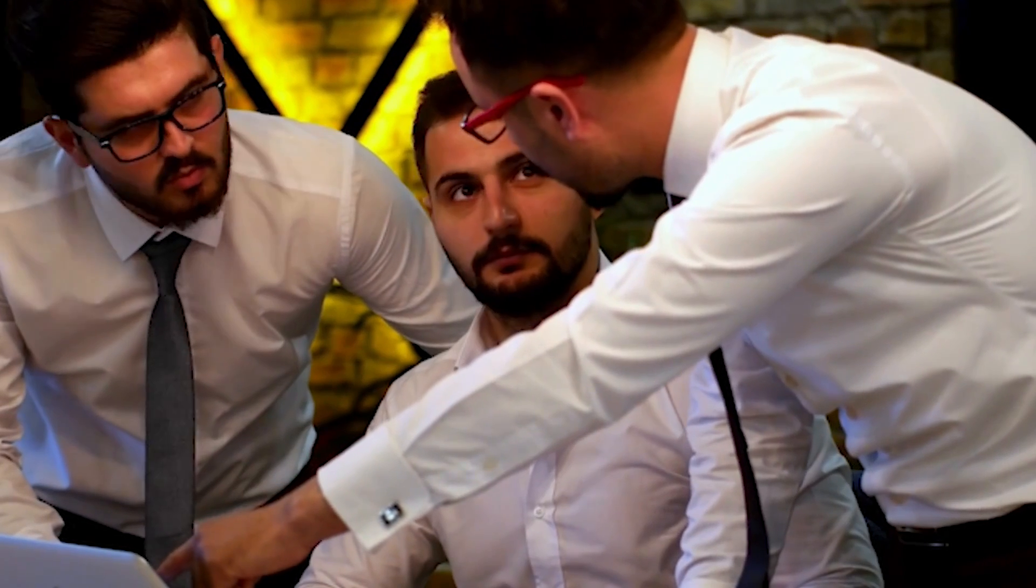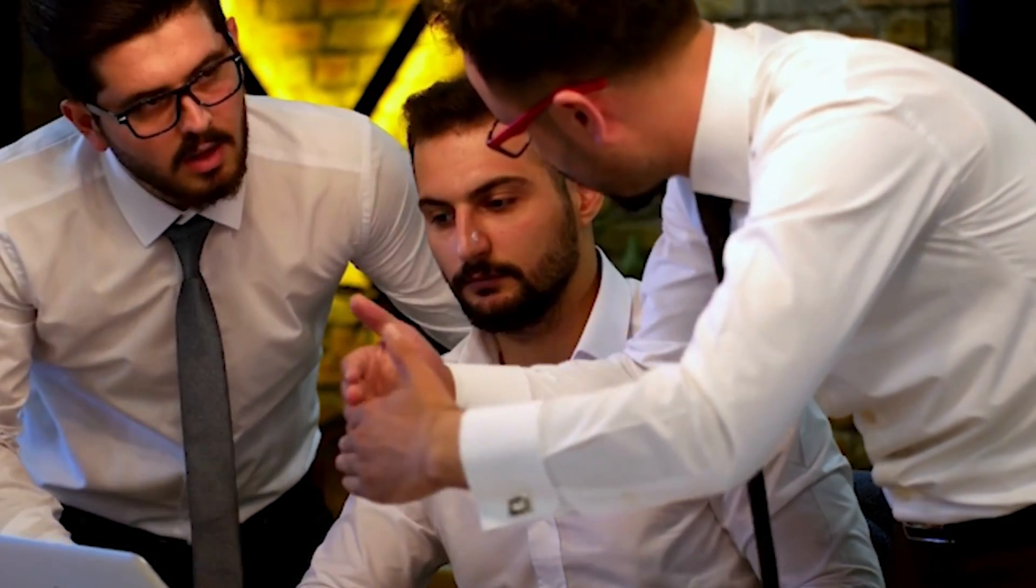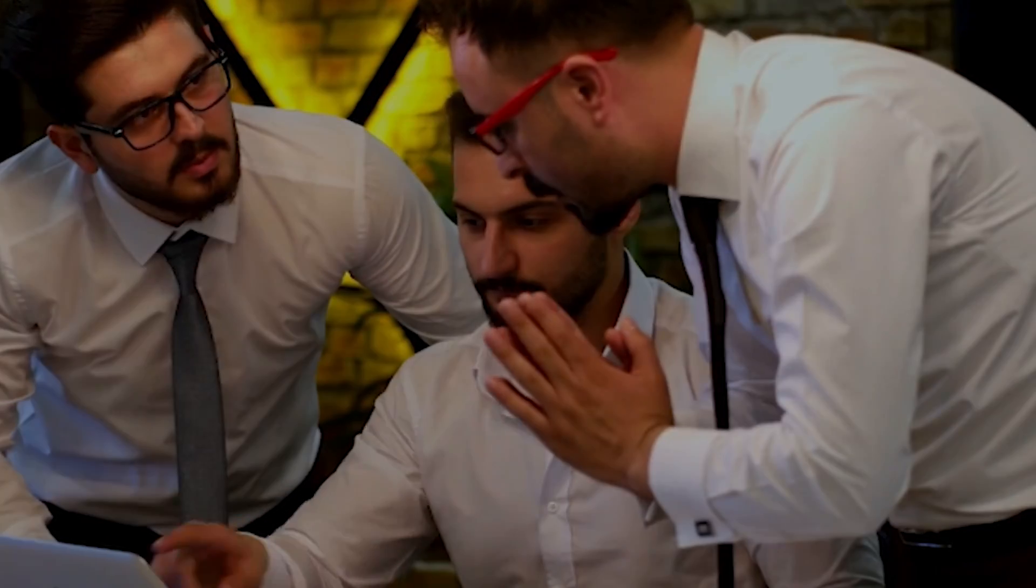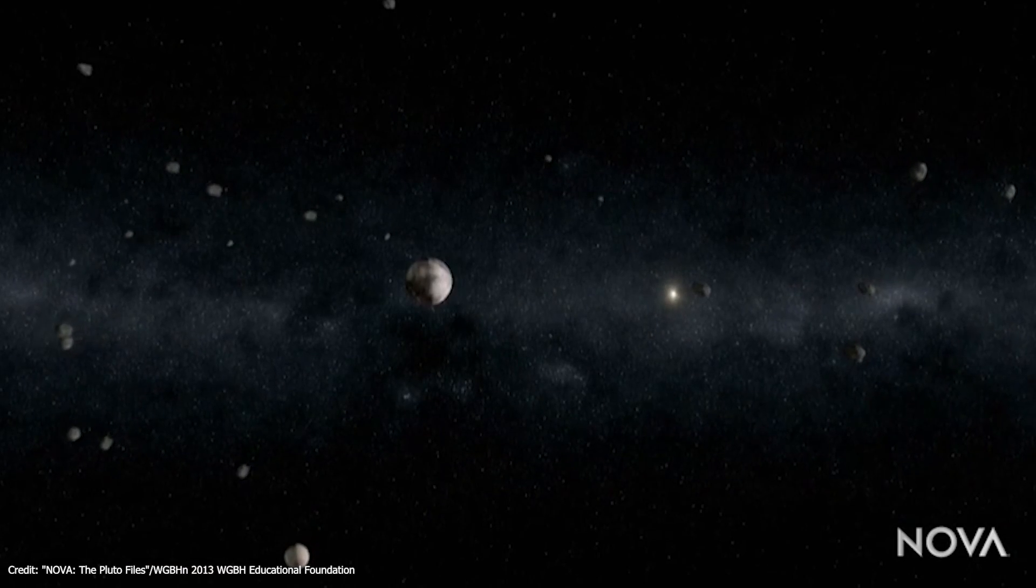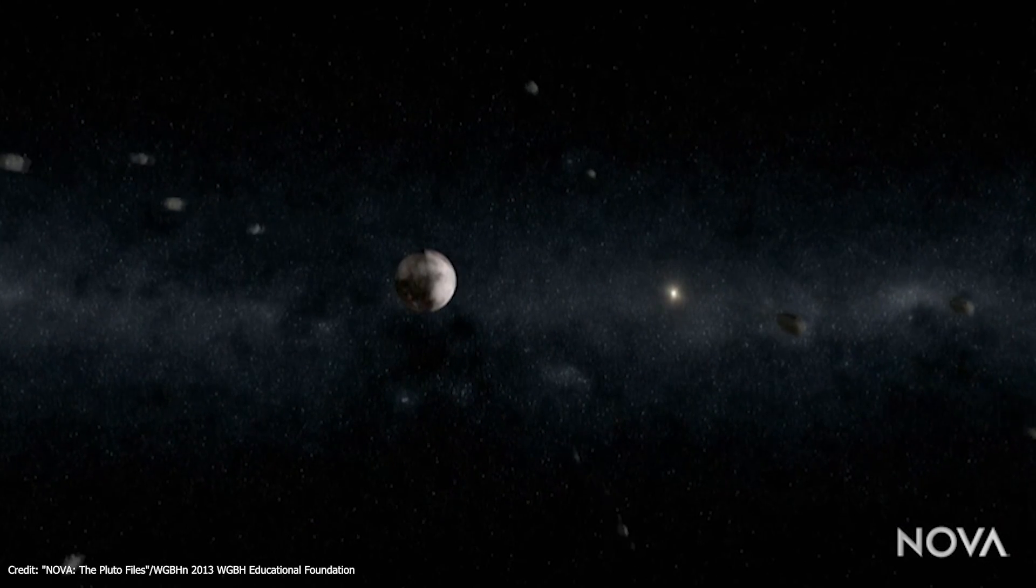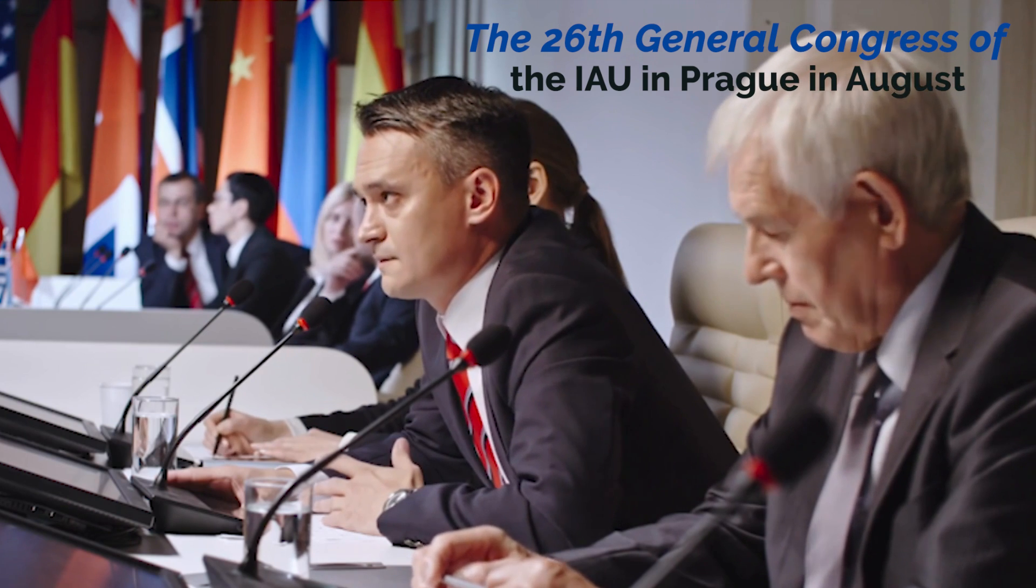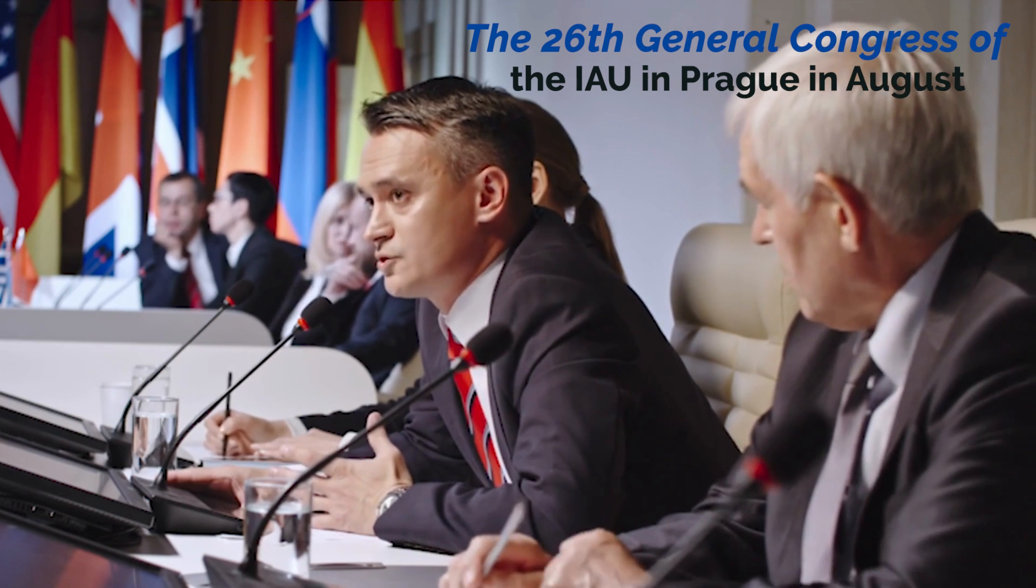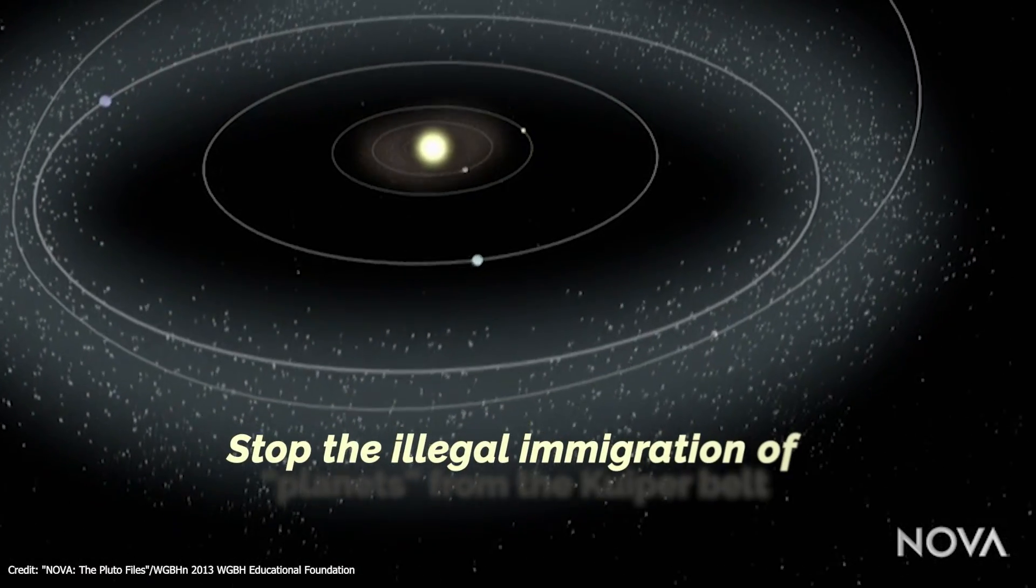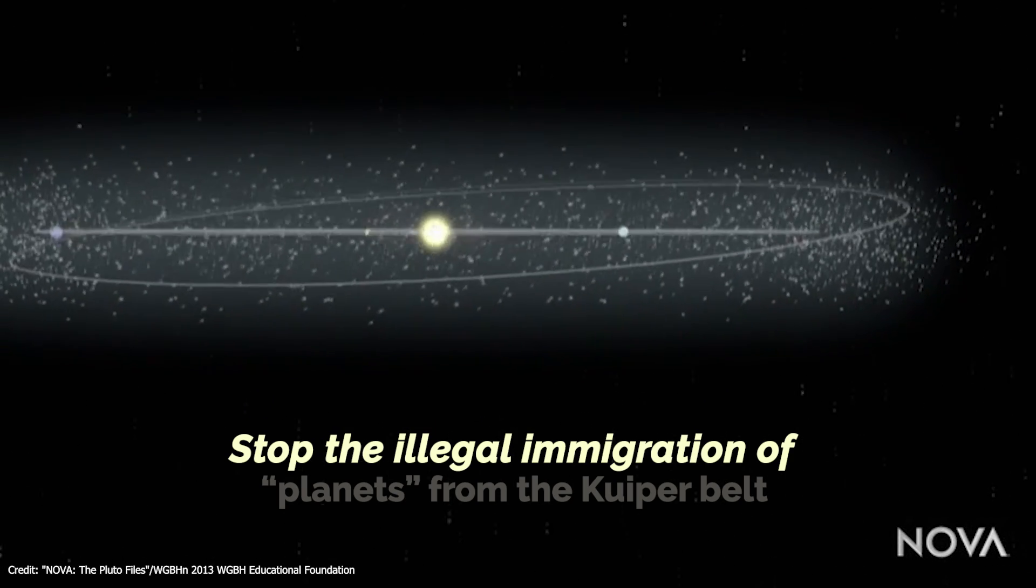This discovery panicked the astronomical community, which, accustomed to the idea of a very neat and tidy classical solar system, feared that it would be faced with the chaotic handling of dozens of companion planets to Pluto. And the 26th General Congress of the International Astronomical Union, to be held in Prague in August, seemed just the time to address this terrible problem once and for all. Something had to be done to stop the illegal immigration of hundreds, perhaps thousands of supposed planets from the Kuiper belt.